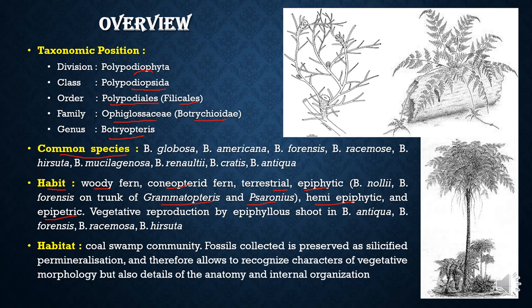Another most characteristic feature of Botryopteris is their epiphyllous shoots. As the name suggests, epiphyllous shoots are those that develop from the foliar lamina or foliar structures. These shoots that develop from foliar structures are called epiphyllous shoots and are one of the characteristic features in some species of Botryopteris.